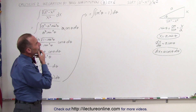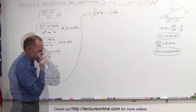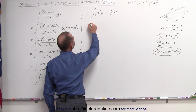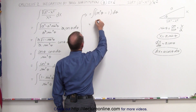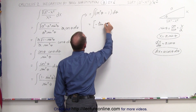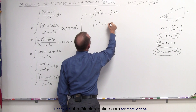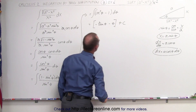Now we have to know what the integral of the cosecant squared of theta is. That is equal to minus the cotangent of theta. And then if we integrate 1, we get minus theta. And of course, we get the constant of integration.